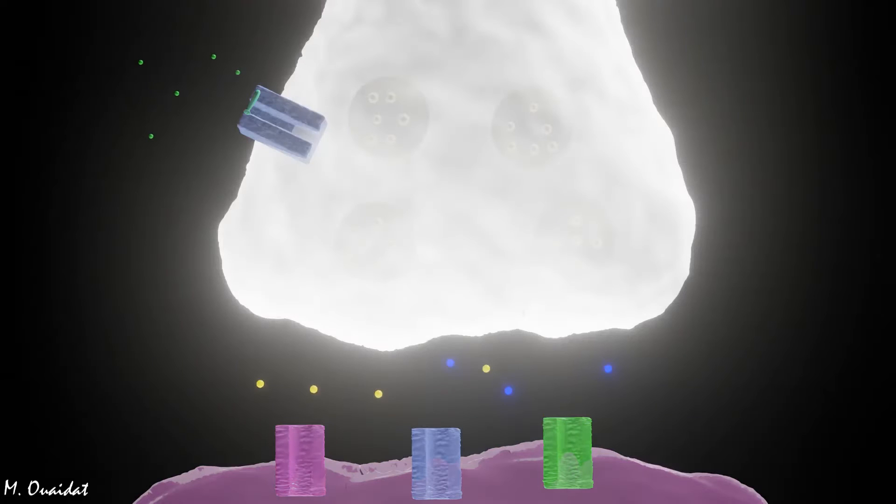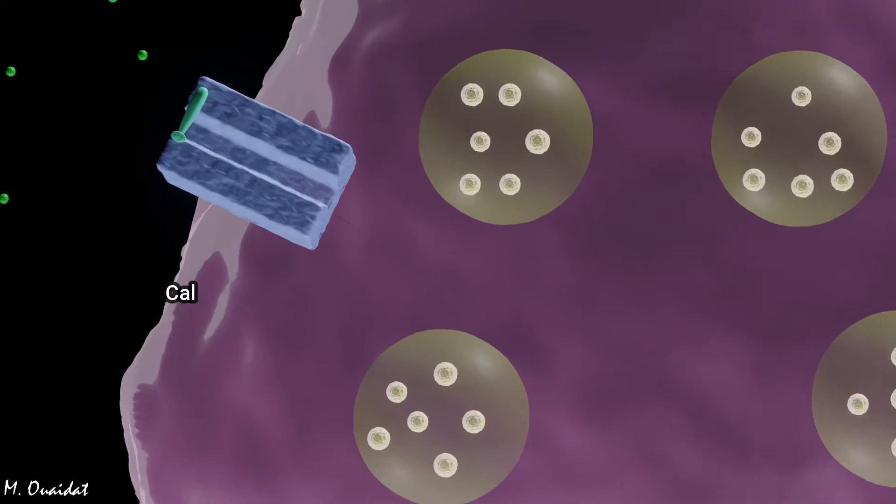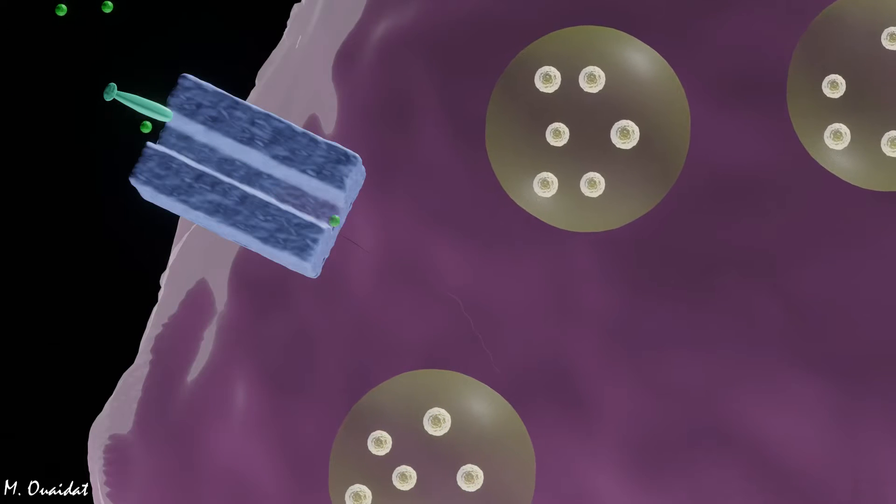When the action potential reaches the terminal end, calcium voltage-dependent channels open, and calcium ions enter into the neuron.